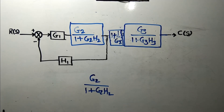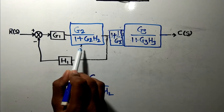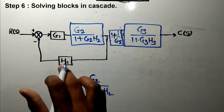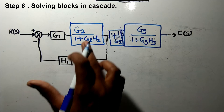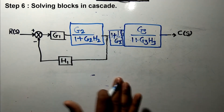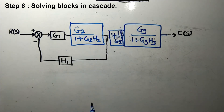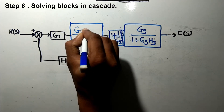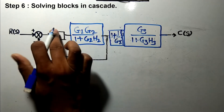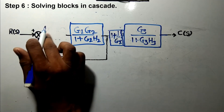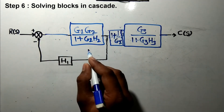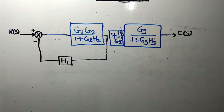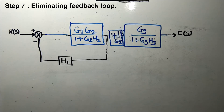In the next step, G1 and the G2/(1+G2·H2) block are in cascade, so we solve these cascade blocks. When blocks are in cascade, the resultant is the multiplication of their transfer functions, so they are converted into a single block: G1 multiplied by G2/(1+G2·H2). Now we can see that this block and H1 form a feedback loop.